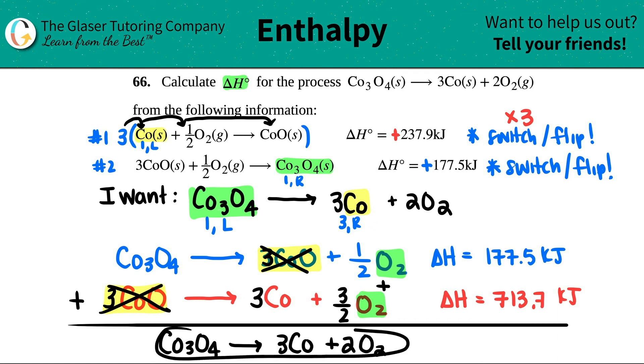And look, this is the equation that I wanted. That means I did everything correctly. And then the delta H would be these delta H's added up. So 177.5 plus 713.7. 891.2 kilojoules. So 891.2 kilojoules will be absorbed because it's a positive number when this equation is done. And that's it.